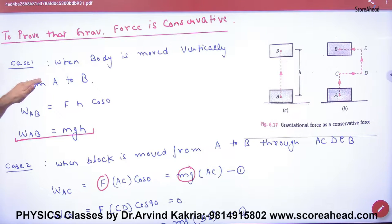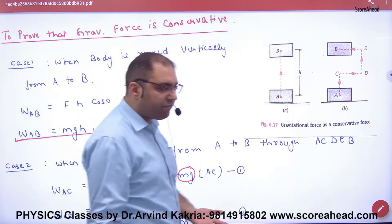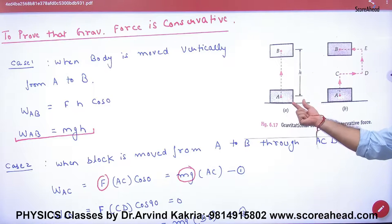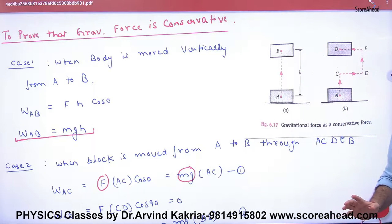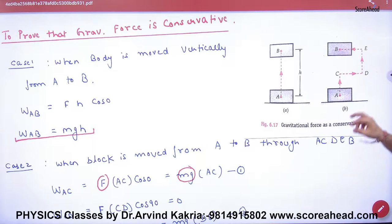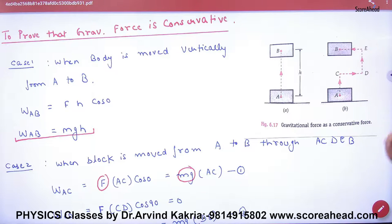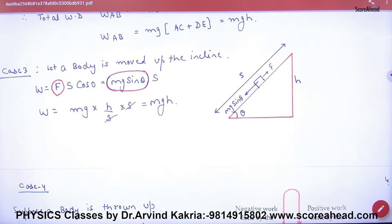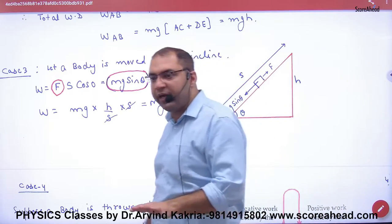The topic is to prove that gravitational force is conservative. To do this, we will take an object to height h from B along different paths. First, we take the straight route. Then we take the route A from C, D, E, to B. Then in the third case we will take the inclined plane. If the answer is the same in all cases, then we have to believe that gravity's force is conservative.